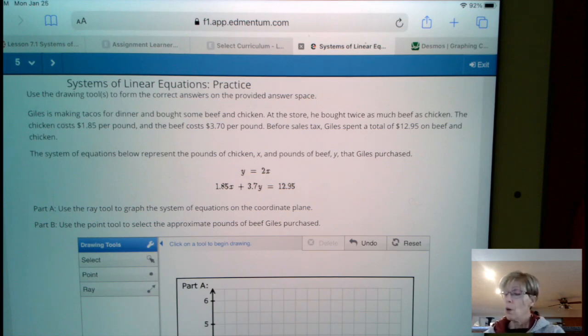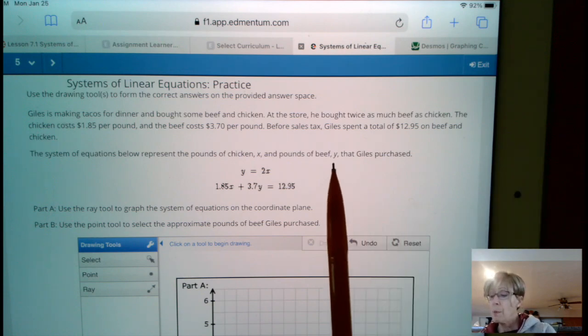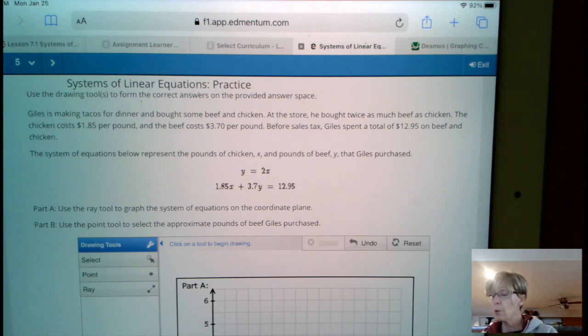One thing to notice here, once we get that graphed in Desmos, the approximate pounds of beef that Gilles purchased. Remember, beef is going to be a Y value. So we need to use that Y.